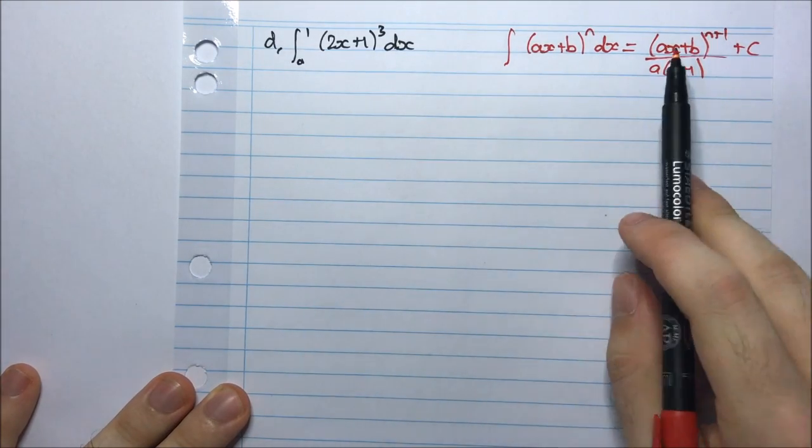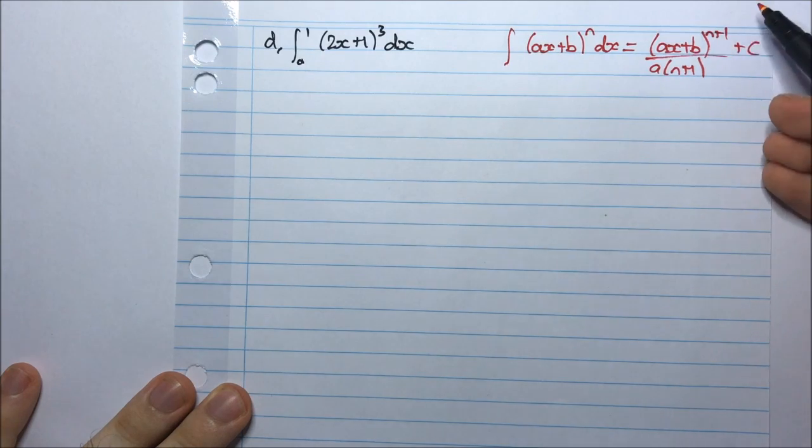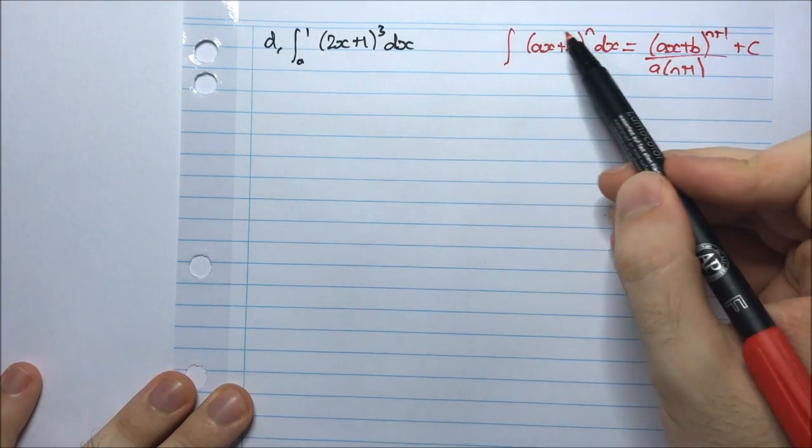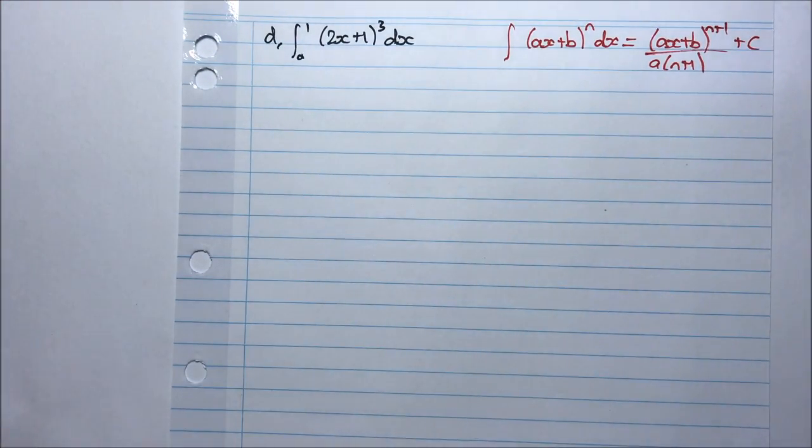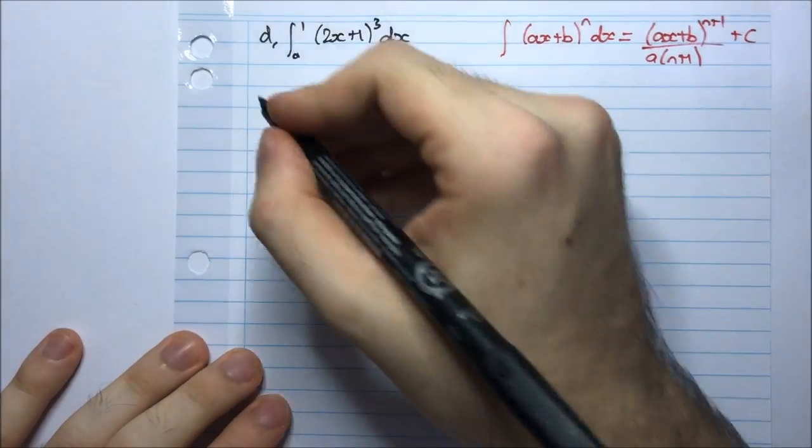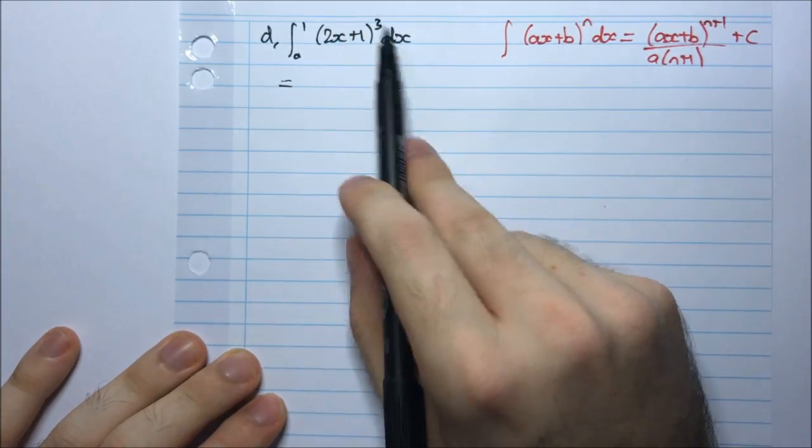We're given that the integral of (ax + b)ⁿ dx is equal to (ax + b)^(n+1) divided by a(n + 1) plus c. This only holds if this is a linear function, which we have here. So we can use this rule.